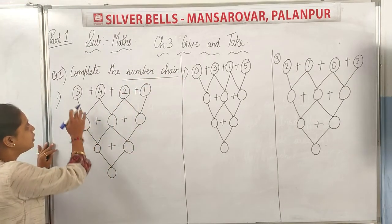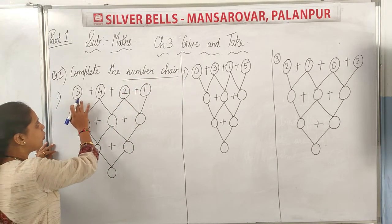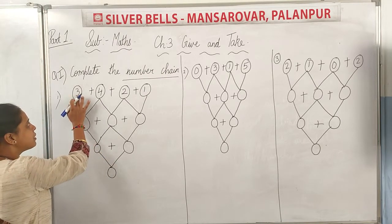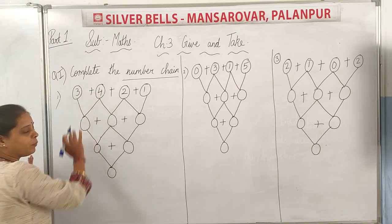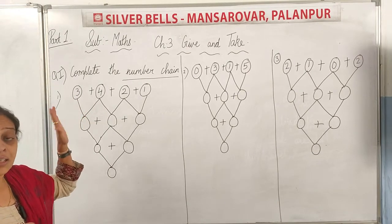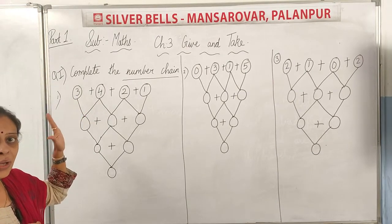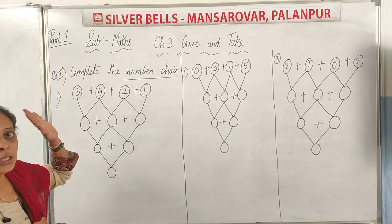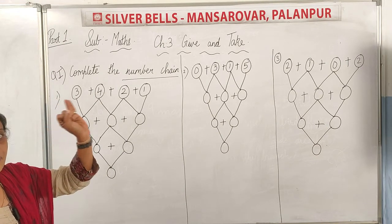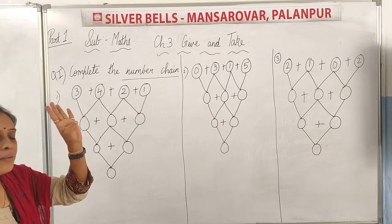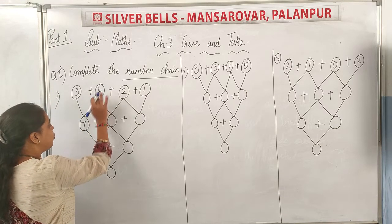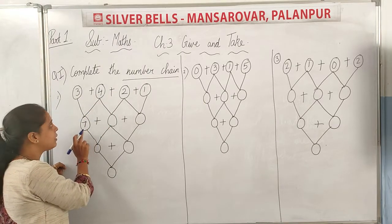Number chain means adding by 4. Here a chain is given and you have to complete it. First is 3 plus 4. How do you add 3 plus 4? You count on: 4, 5, 6, and 7. So the answer is 7.